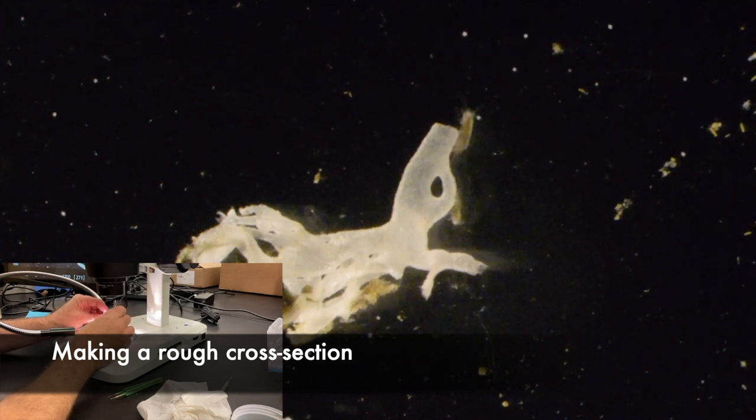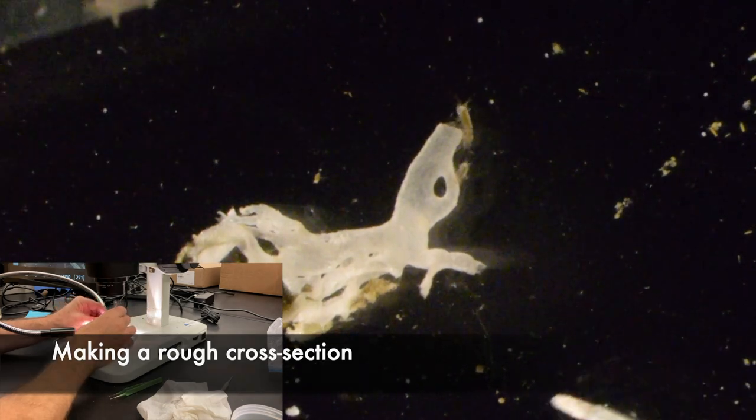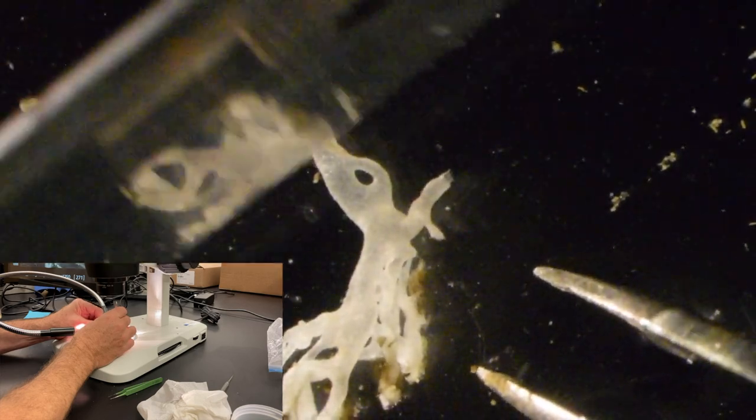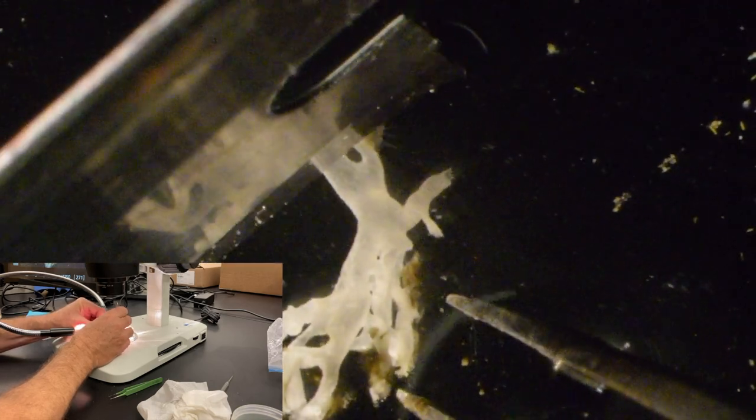I wanted to see this sponge in cross-section so I made a really rough cross-section using a razor blade.